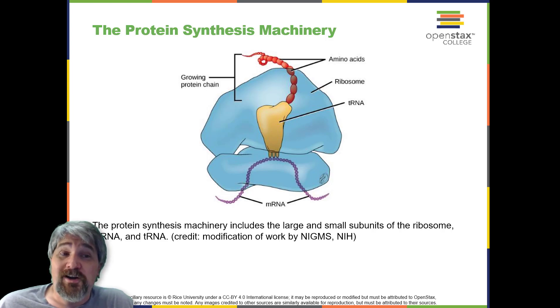Therefore, tRNAs are the molecules that actually translate the language of RNA into the language of proteins. For each tRNA to function, it must have its specific amino acid bonded to it.